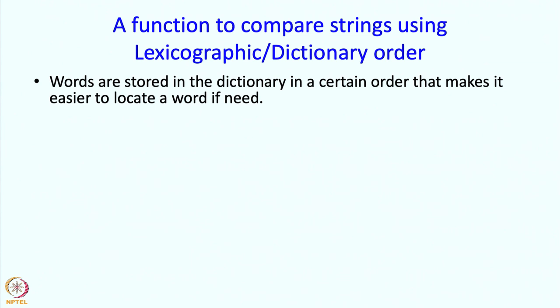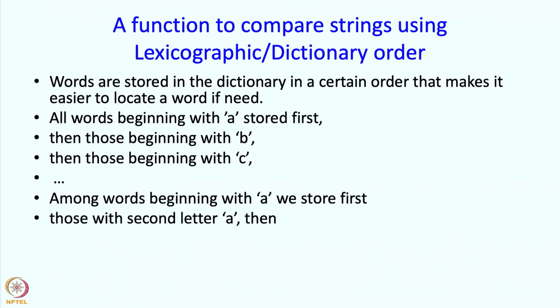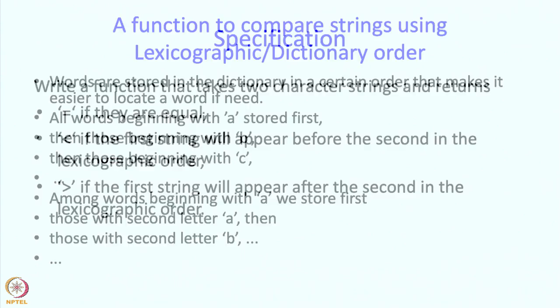Now we move on to a little bit more complicated function, but more than the complexity, it is a new notion that we want to introduce. This is a notion that is very commonly used with character strings, that is comparing them using the lexicographic or the dictionary order. What is that? Words are stored in the dictionary in a certain order that makes it easier to locate the word if needed. Then those beginning with P, then those beginning with C and so on. And within the words that begin with A, what is stored first? Well, those with second letter A, then those with second letter P and so on. This is the so-called dictionary order of words or the lexicographic order of words.